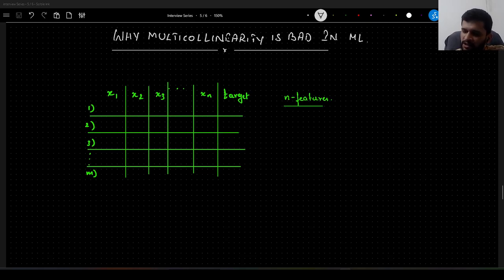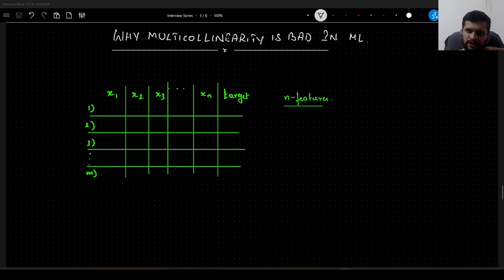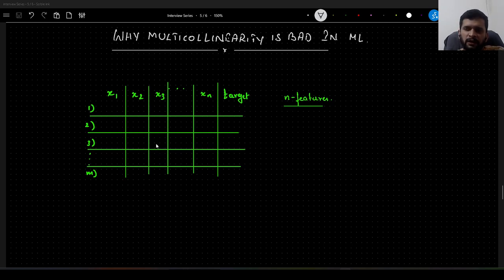Hello guys, so in this video we will see another important machine learning interview question. The question goes like this: let us say we have a dataset and we found out that we have multicollinearity in it. So why is it bad for a machine learning algorithm? This is the question we will try to answer in this video.